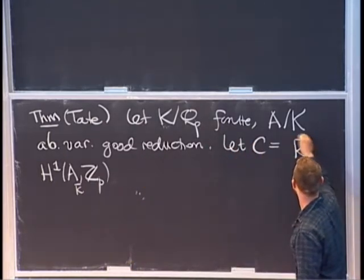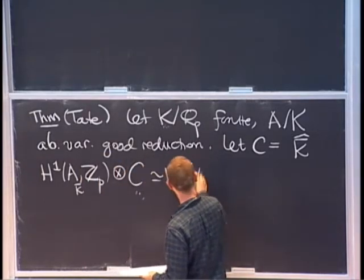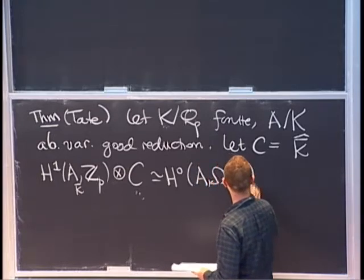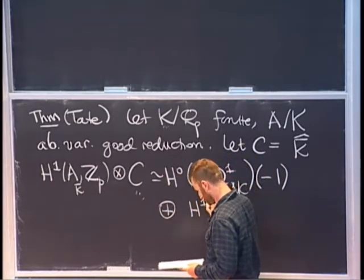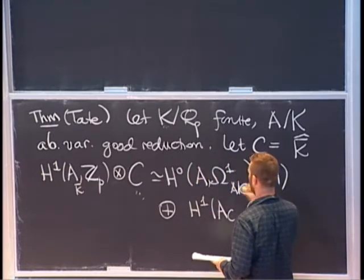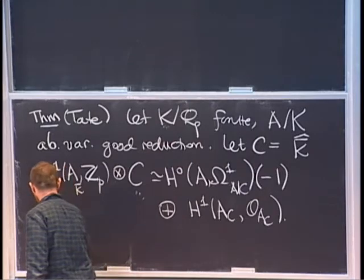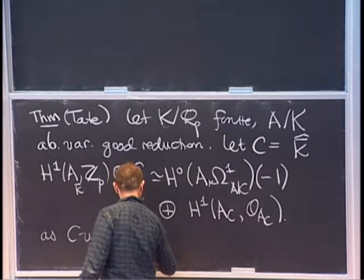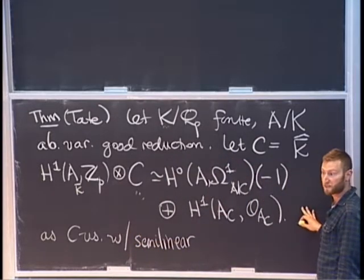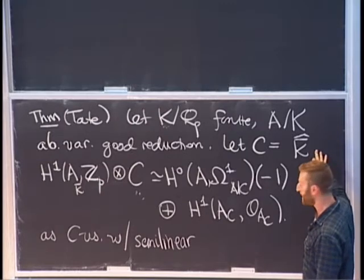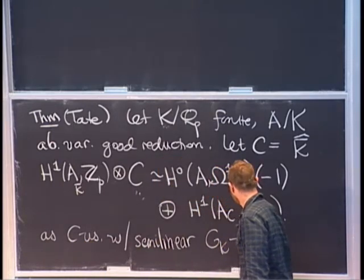So this thing, tensored with C, breaks up in exactly the same way: H⁰ of A, Ω¹_{A/C}, plus there's a little twist — a Tate twist — you have to twist by the cyclotomic character inverse. This is an isomorphism of C vector spaces endowed with an action of Galois. Both sides are C vector spaces and they have an action of the Galois group of K̄ over K. That action doesn't respect the scalar multiplication by C; it's just semilinear — a G_K action.